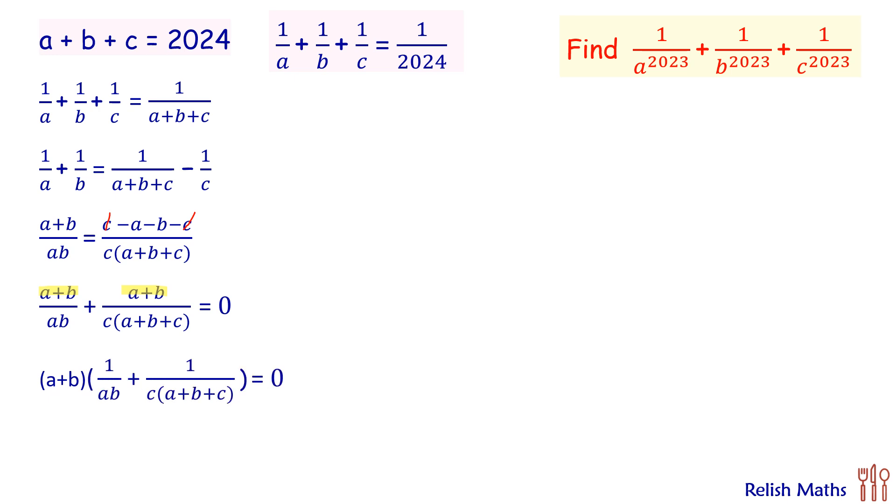The expression is reduced in this form. So again taking LCM as ab times c times a plus b plus c, we'll get LHS in this form.